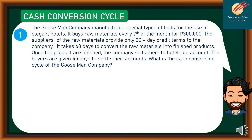Let's consider problem number one. The Guzman company manufactures a special type of beds for the use of elegant hotels. It buys raw materials every seventh of the month for 300,000 pesos. The suppliers provide only 30-day credit terms to the company. It takes 60 days to convert the raw materials into finished products. Once the products are finished, the company sells them to hotels on account, and buyers are given 45 days to settle their accounts. What is the cash conversion cycle of the Guzman company?